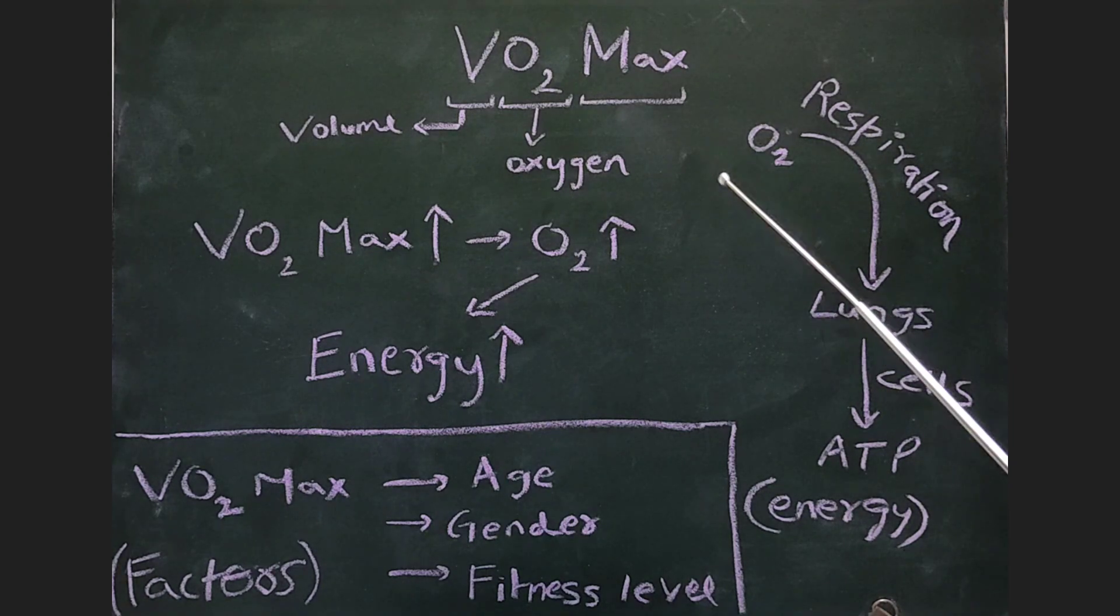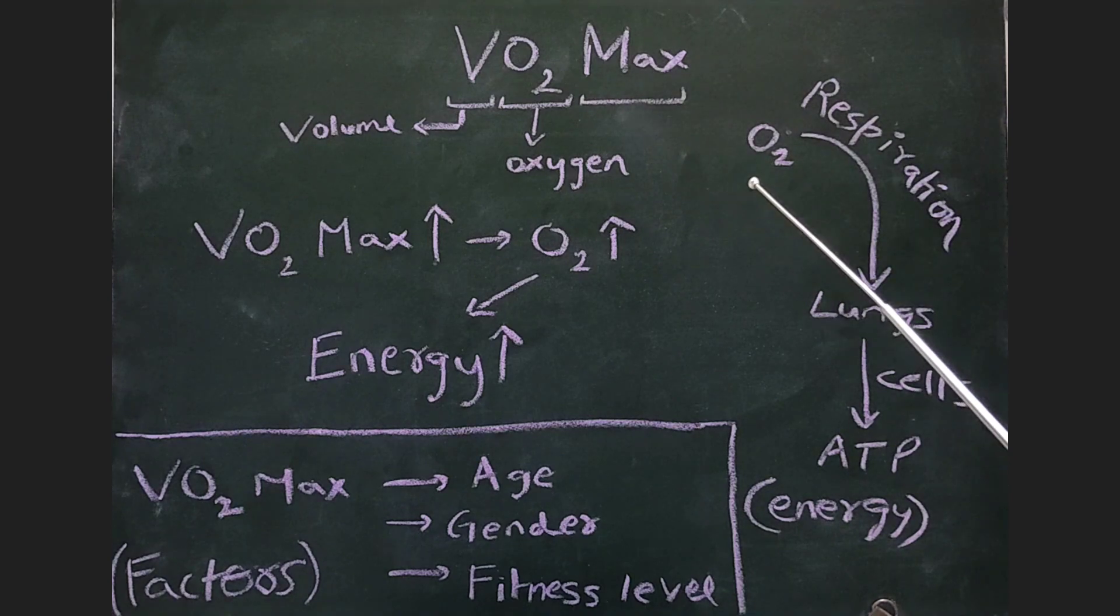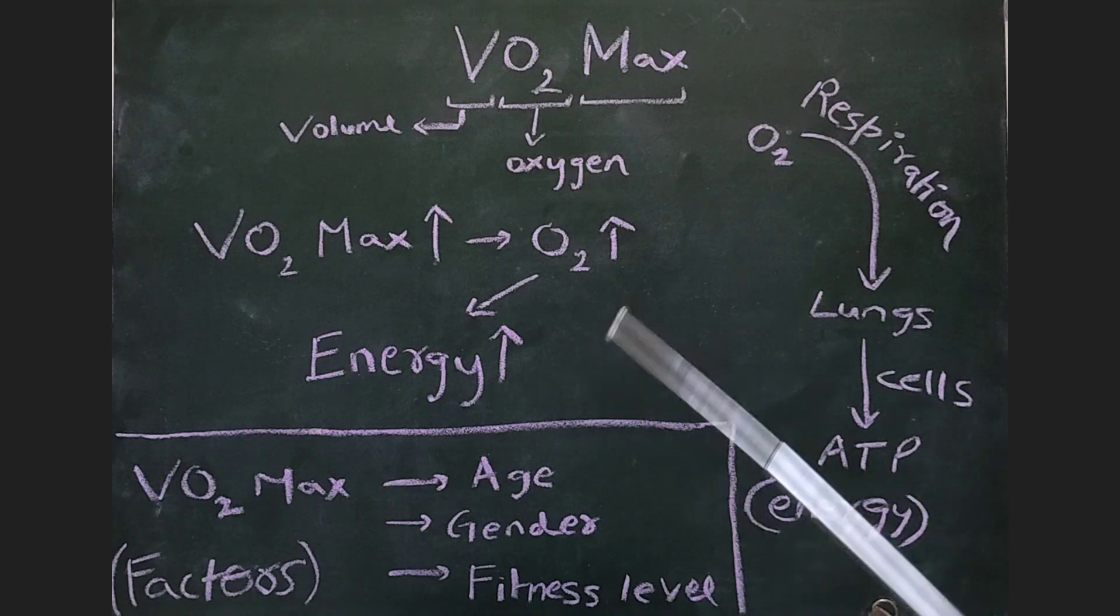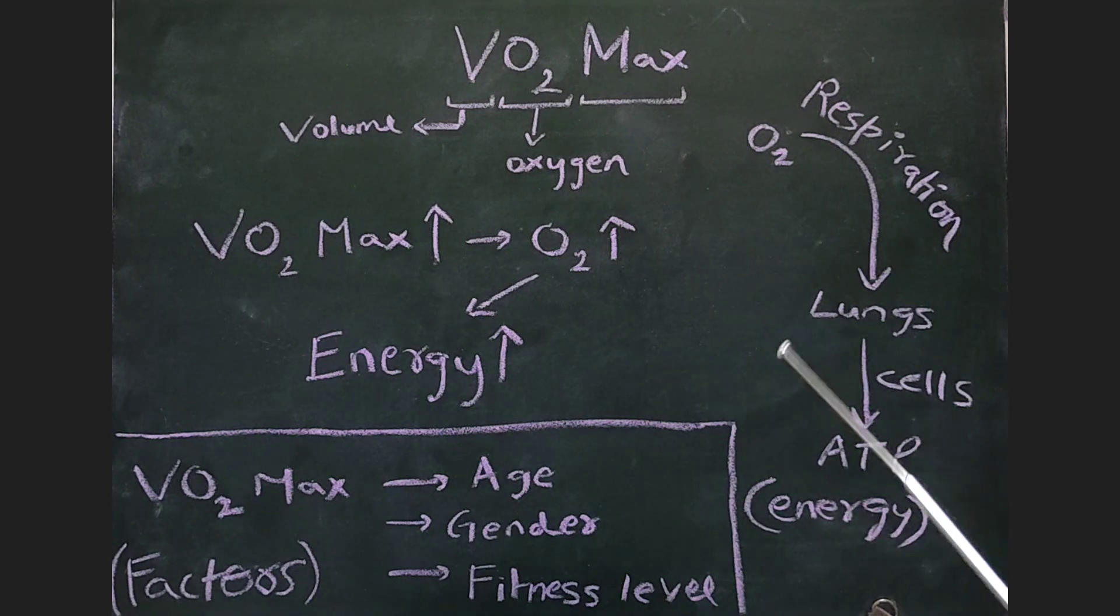Now, to understand it better, oxygen is a critical component of the respiration process. Your lungs absorb oxygen and convert it into the energy currency called ATP or adenosine triphosphate, which gives energy and power to the cells during exercise and basically life.